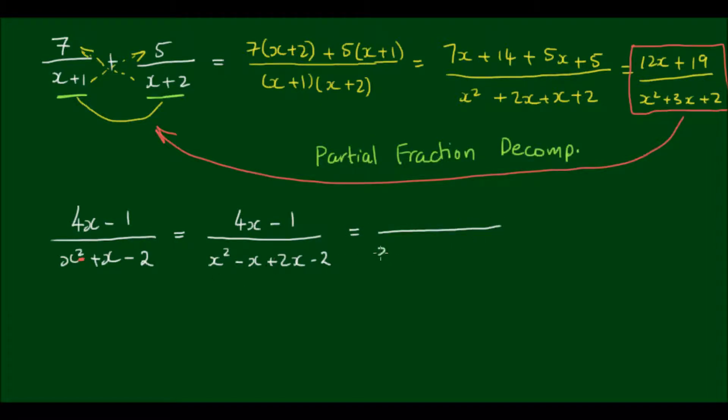And then I can factor out an x, so x outside of (x-1). And then these two terms I can factor out a 2 and get 2 outside of (x-1). And I'll copy the 4x minus 1 on the top.